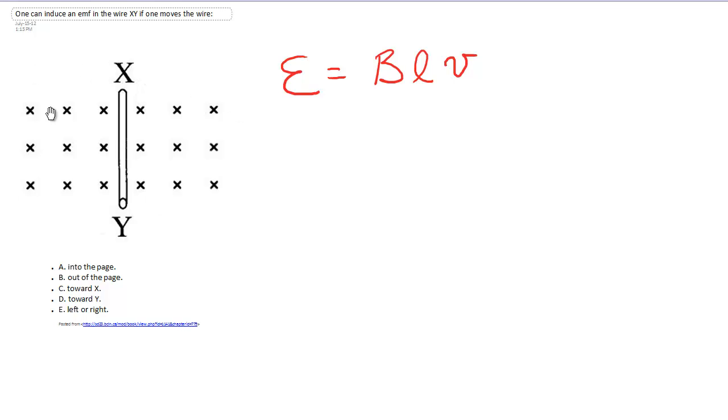Now we see in our diagram our field lines are given by X's, which is into the page. So if I move my conducting rod into the page or out of the page, I'm simply moving parallel to those field lines and I'm not cutting across them. So A and B are not going to give us any induced EMF.